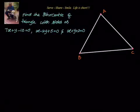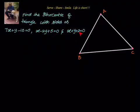Hello friends, welcome back. Let us look at this problem. We have to find out the orthocenter of a triangle whose sides are: 7x plus y minus 10 equals to 0, x minus 2y plus 5 equals to 0, and x plus y plus 2 equals to 0.